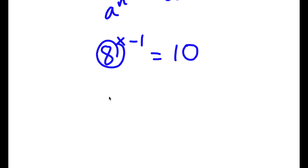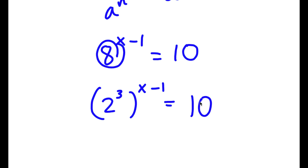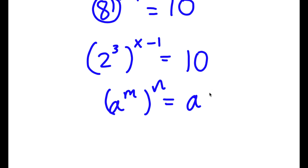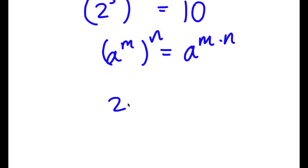Now 8 I can rewrite as 2 to the power of 3. So now I have 2 to the power of 3 to the power of x minus 1 is equal to 10. And if I have something in the form a to the power of m to the power of n, this is equal to a to the power of m times n. So 2 to the power of 3 to the power of x minus 1 equals 2 to the power of 3 times (x minus 1).